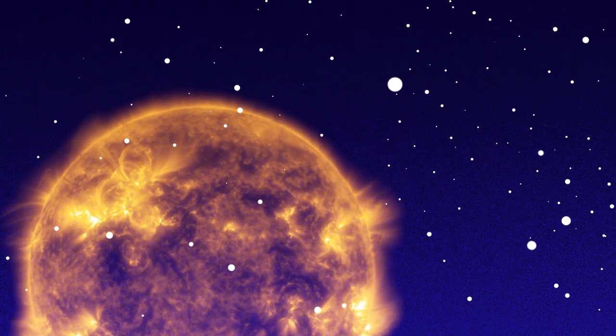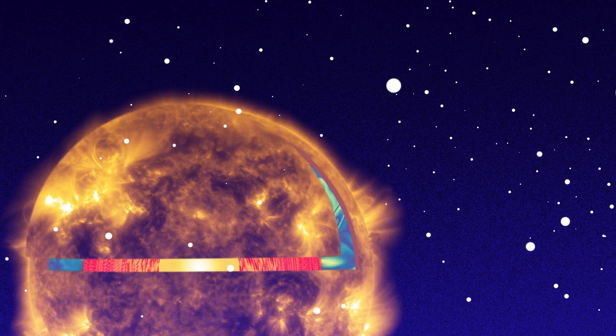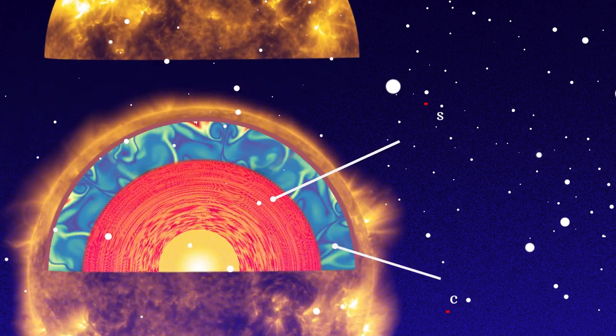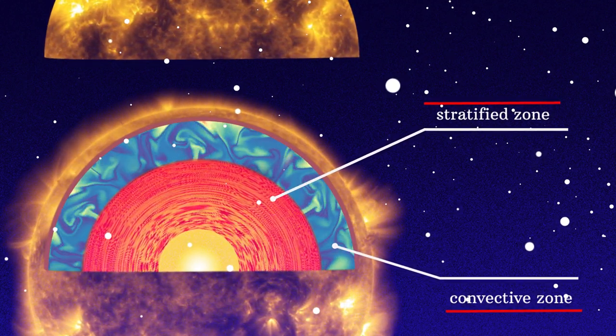A similar phenomenon is observed inside stars like our Sun. It is also composed of a convective zone and a stratified zone, whose oscillations allow us to probe its interior like a scanner.